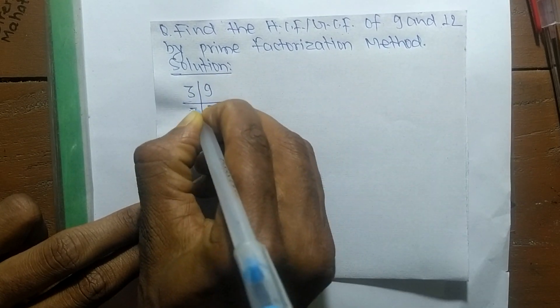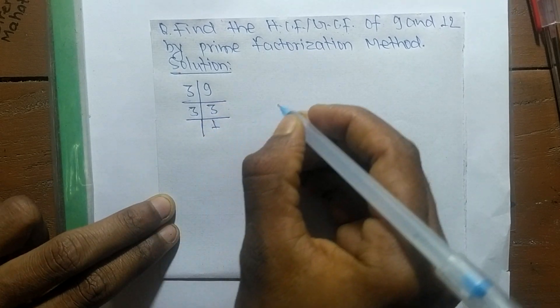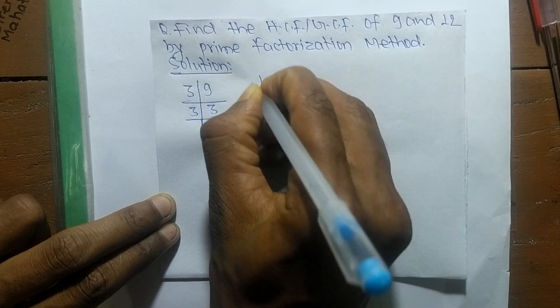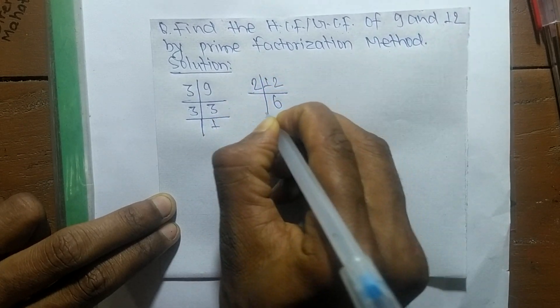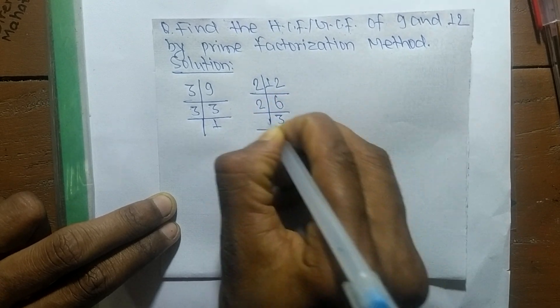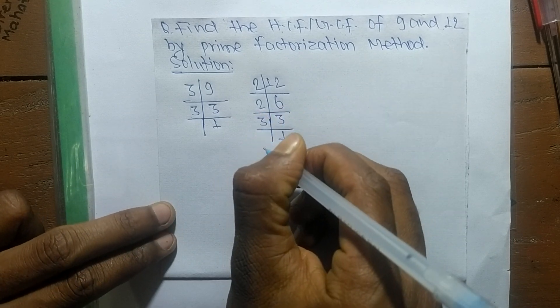9 is 3 times 1, which equals 3. In the same way, the prime factors of 12: it is 2 times 6 equals 12, 2 times 3 equals 6, and 3 times 1 equals 3. After finding the prime factors,